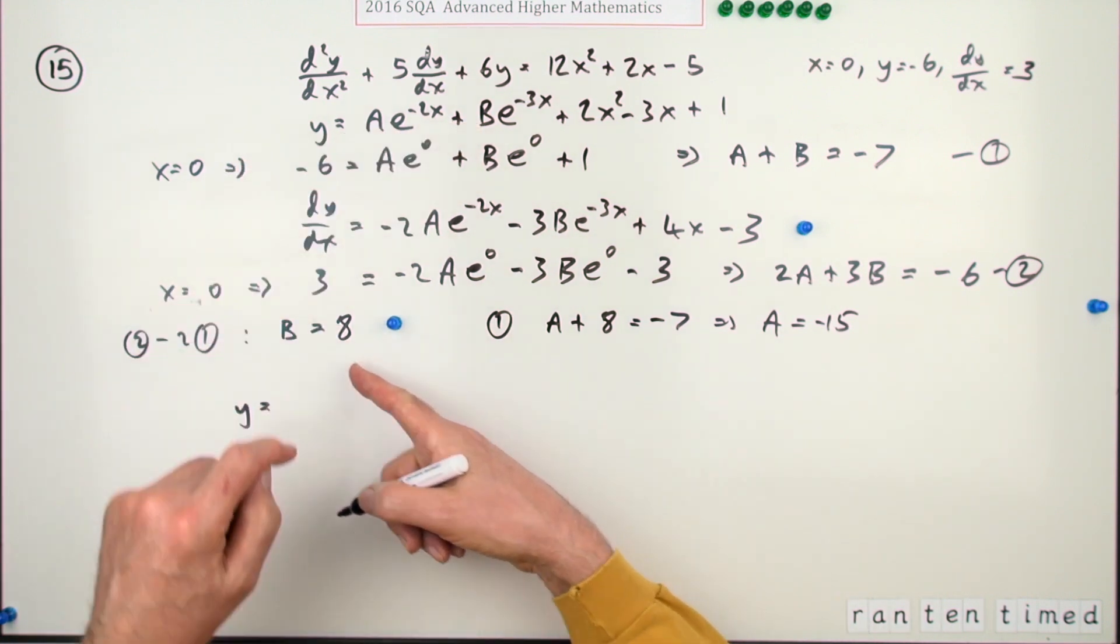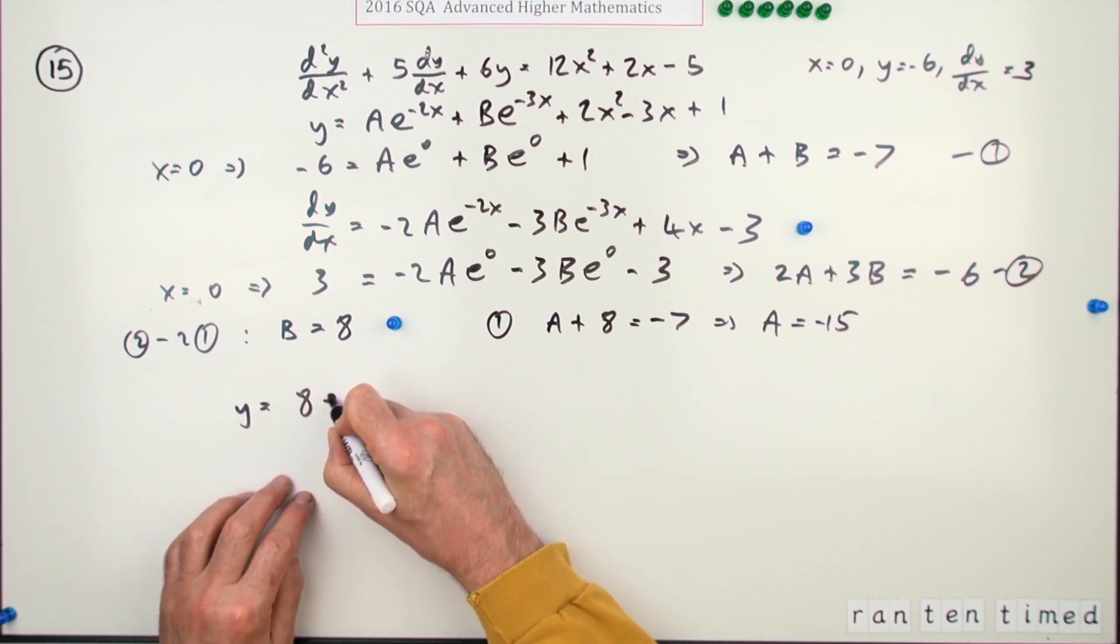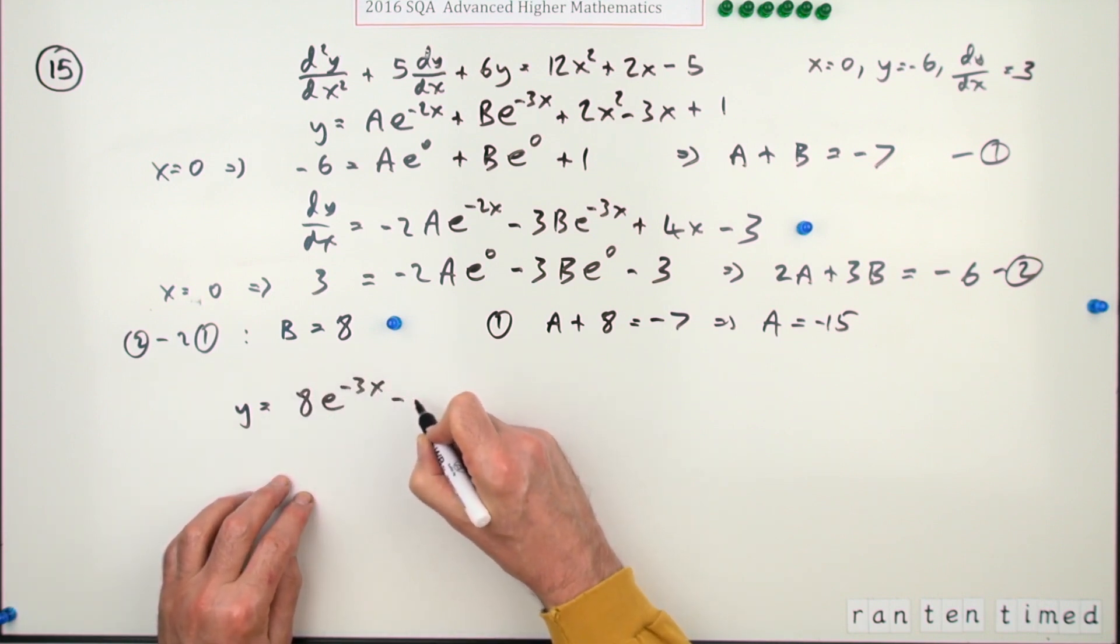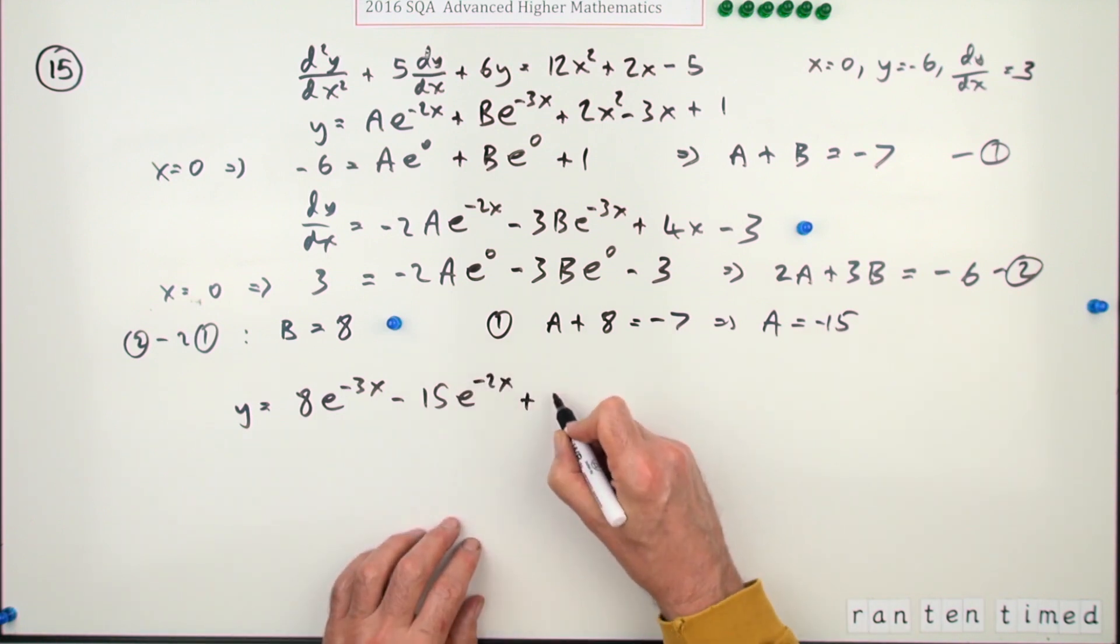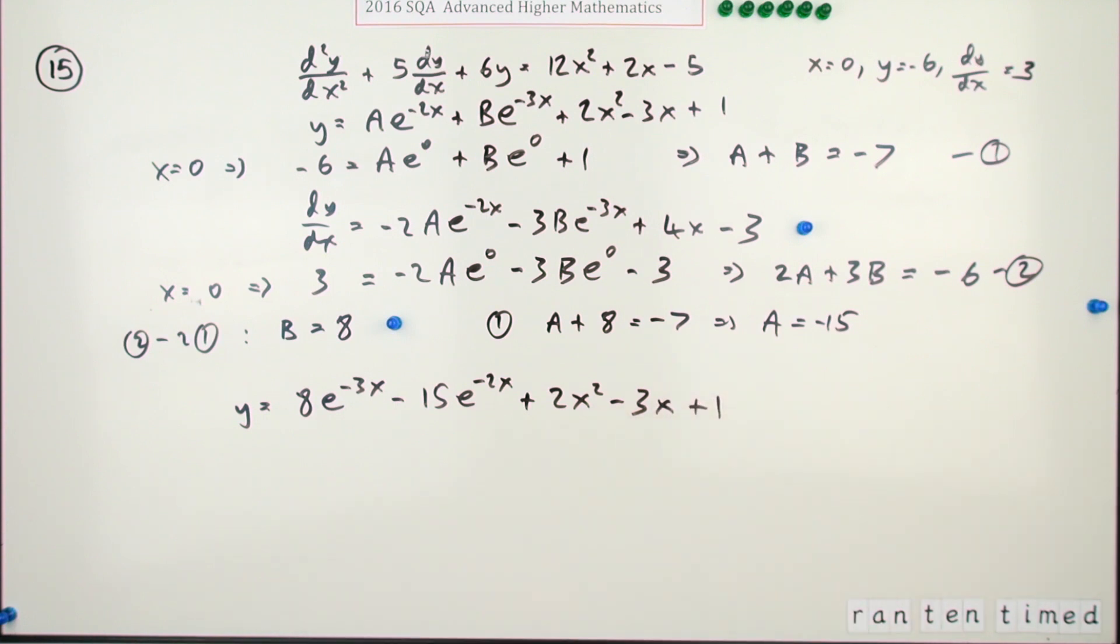And then finally putting that all together, so y equals, and I've got it in this order. So that's negative 15 of that. Maybe I don't want to start with a negative. Maybe I'll put the B first, put this term first. So I'll put 8e to the negative 3x minus 15e to the negative 2x, and then the quadratic, so I'll take 2x squared minus 3x plus 1. There's the last mark.